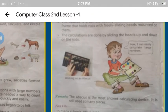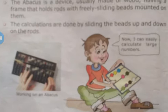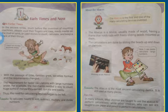Now students, I am going to discuss about the Abacus. What is Abacus? The Abacus is the first and one of the many calculating devices invented. The Abacus is a device usually made of wood, having a frame that holds rods with freely sliding beads mounted on them. The calculations are done by sliding the beads up and down on the rods. The Abacus is the most ancient calculating device.